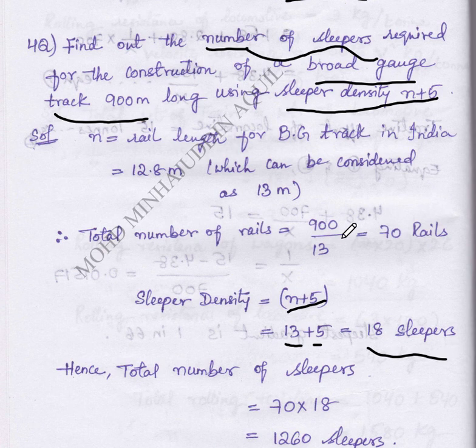Next, total number of rails can be calculated by the formula: 900, the broad gauge length, divided by length of rail equals number of rails, that is 70 rails we are getting.